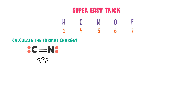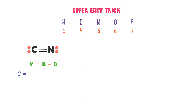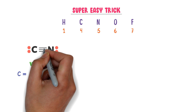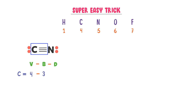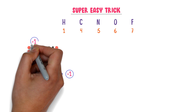Calculate the formal charge of every atom in this molecule. First, I find the formal charge of the carbon atom using the trick: V minus B minus D. The valence of carbon is 4, minus the total number of bonds formed by the carbon atom — 1, 2, 3 — so carbon forms three bonds, minus the total dots present on carbon — 1, 2 — so there are two dots. After calculation, I get minus 1. So the formal charge on this carbon atom is minus 1.